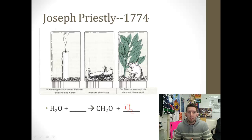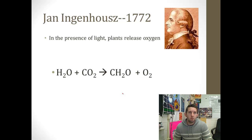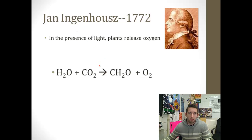These two organisms seemed self-sustaining together — the mouse exhales CO2, and the plant uses it. So we've almost finished our overall equation. Van Helmont and Priestley helped fill in those blanks. Moving on to Ingenhousz in 1772, he found that in the presence of light, plants release oxygen. So plants need water and carbon dioxide, and in the presence of light — which we write over the reaction arrow — they produce carbohydrate and oxygen. There is our overall unbalanced reaction of photosynthesis.